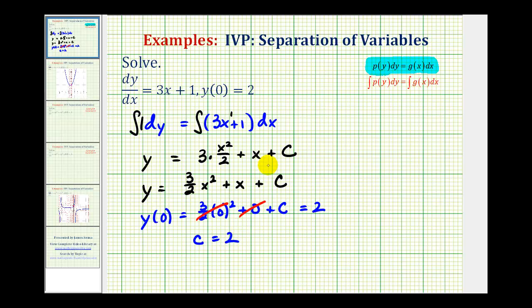Which means the particular solution to this initial value problem would be y equals three halves x squared plus x plus two.